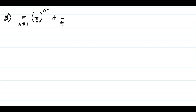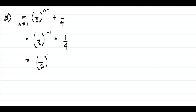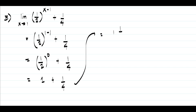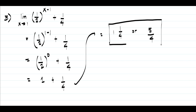In example number five, we have the limit of one-half raised to x minus 1 plus one-fourth as x approaches 1. Substituting gives us one-half raised to 1 minus 1 plus one-fourth, which is one-half raised to 0 plus one-fourth. Since one-half raised to 0 is 1, we get 1 plus one-fourth, which is 5 over 4 or one and one-fourth.